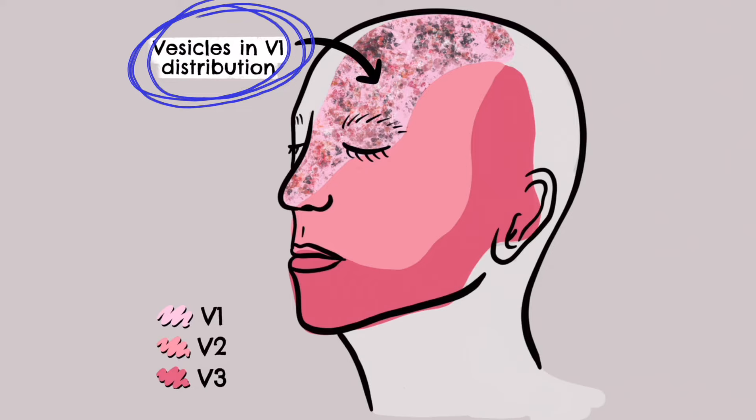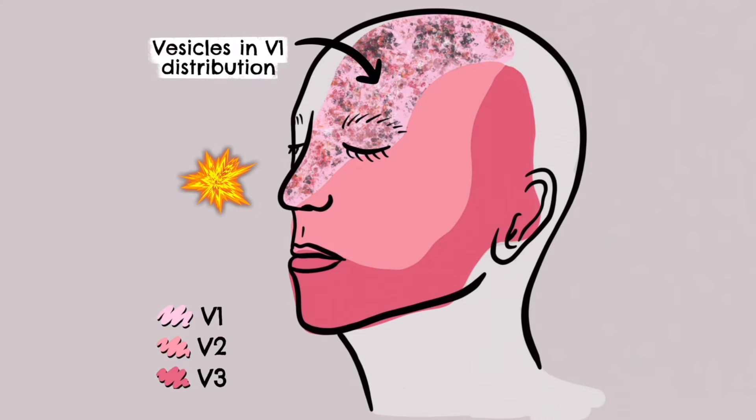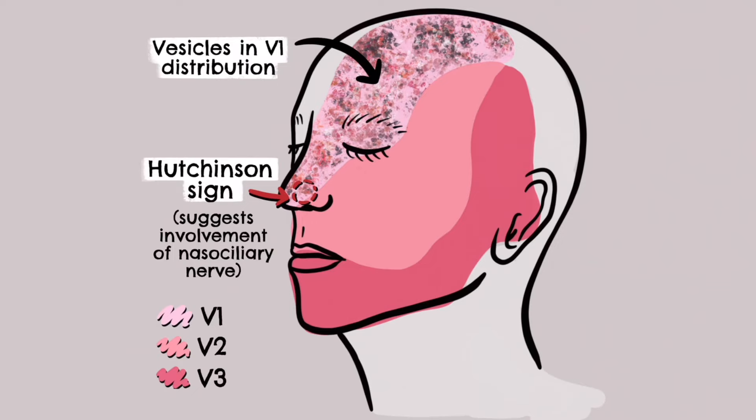Hutchinson's sign, defined as skin lesions at the tip, side or root of the nose, is a strong predictor of ocular inflammation and corneal denervation in herpes zoster ophthalmicus and suggests the involvement of one of the main branches of the ophthalmic nerve called the nasociliary nerve.